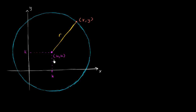So what's a relationship going to be between x, y, h, k, and r? I could have put this point x, y anywhere on the circle — I could have done it here as well. This would also be r away from the center.